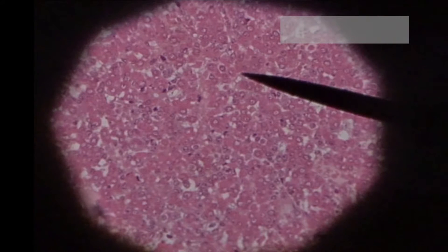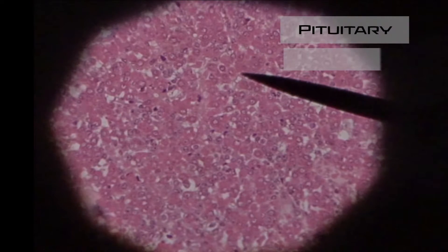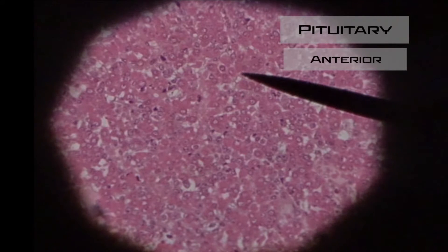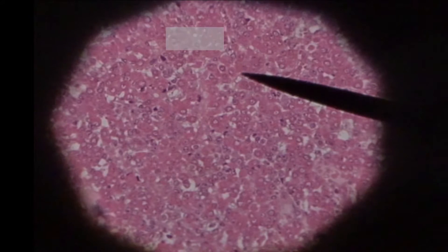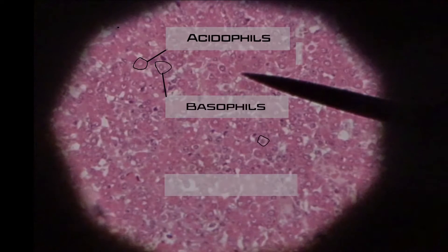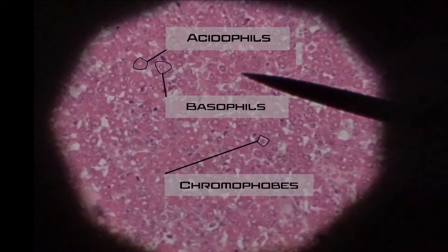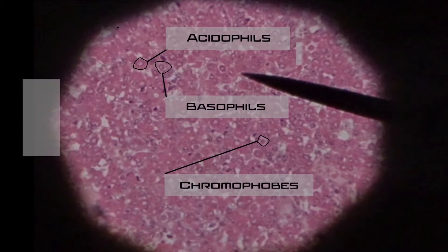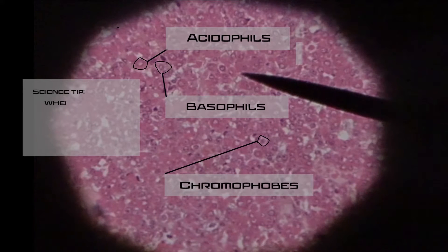What we're looking at now is a slide of the pituitary gland. There is an anterior and posterior portion to the pituitary, so we're looking at the anterior right now. There are three cells you should be able to identify: acidophils, basophils, and chromophobes. With the acidophils, they usually stain a more hot pink color — they got their name because of the staining process, acidophil meaning love.